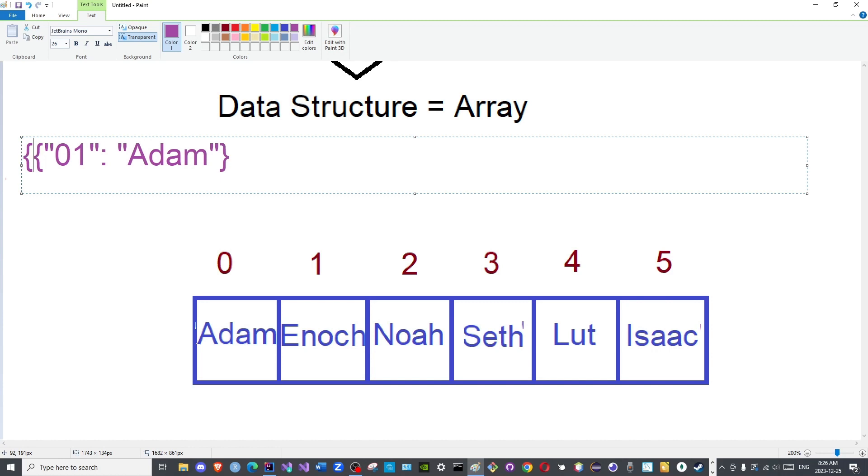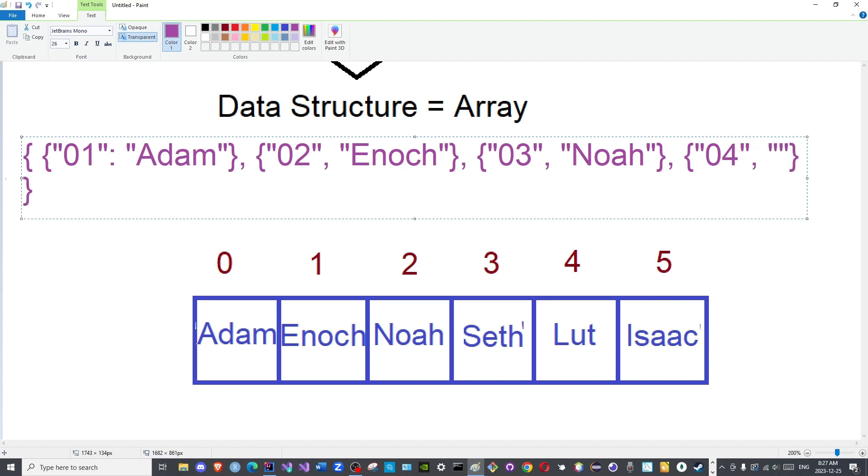You know what, this is how I will represent it. I will create it as if it is a two-dimensional array and then use these pairs individually like so. Then I will assign 02 to the name Enoch. Then another identifier or another label, 03, Noah. Then another identifier, 04, Seth.